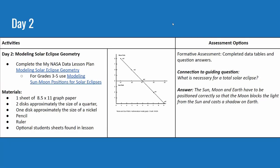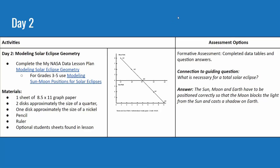On day two, we have modeling eclipse geometry. This activity is differentiated for different grade levels. There's a graph that students can either make or use a pre-made version, and they use disks about the size of a quarter or a nickel to model the alignment for a partial, total, and annular eclipse. The connection to the guiding question is what is necessary for a total solar eclipse — the Sun, Moon, and Earth have to be positioned correctly. This is not a to-scale model.